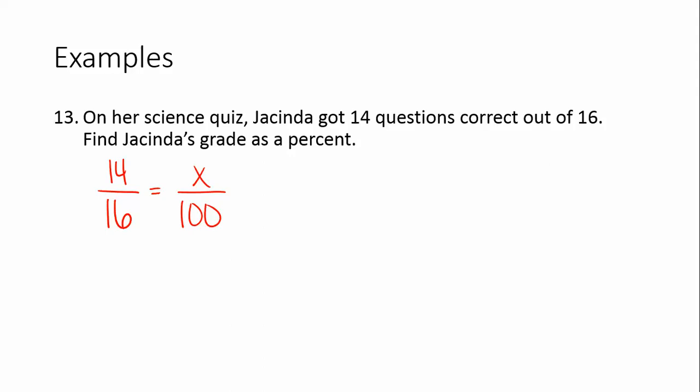So we just need to cross multiply. 1400 equals 16x. Divide both sides by 16. And we get that x equals. And we can do some reducing here. 1400 divided by 16, though, is 87.5. So she gets an 87.5% on her science quiz.